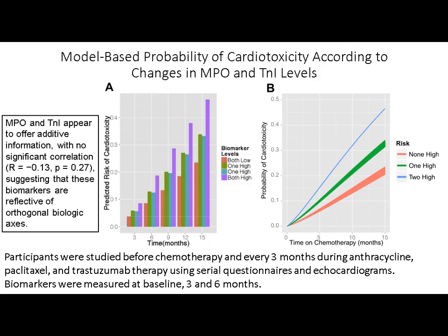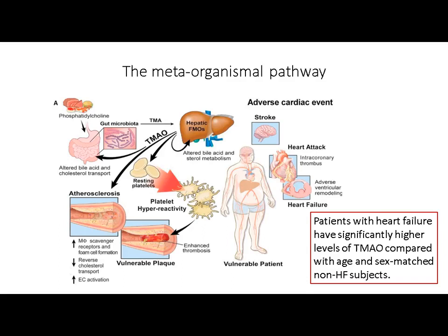Regarding the multi-biomarker approach, a model-based probability of cardiotoxicity according to changes in different biomarkers shows that myeloperoxidase and troponin appear to offer additive information with no significant correlation, suggesting these biomarkers reflect orthogonal biological axes and have additive value when examined together.